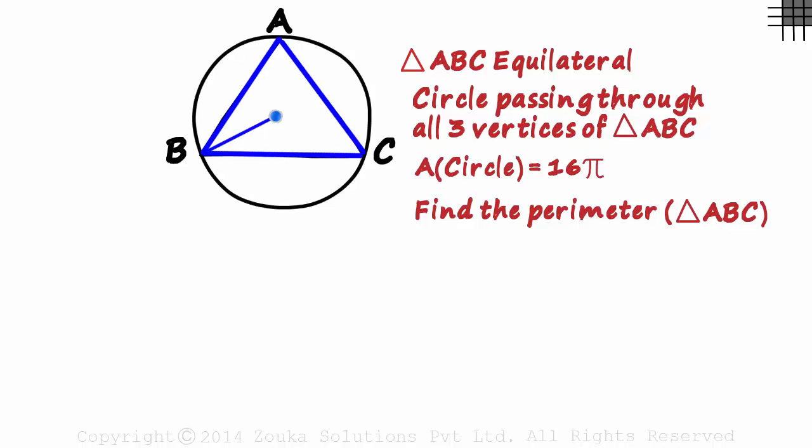So if we are able to find the radius of this circle, we can easily find this side, which in turn will give us the perimeter. And guess what? We have the area of the circle, and that will give us the radius.